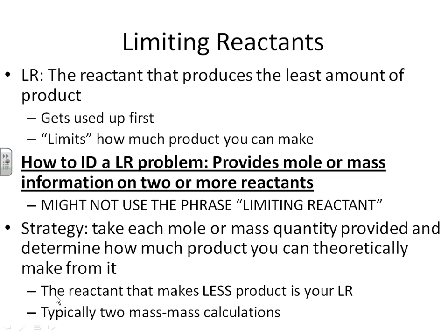How to identify a limiting reactant problem: how do you know that you have one? Because the phrase 'limiting reactant' will most likely not be used. You cannot rely on the problem saying which reactant is limiting — it actually won't say that. What it will say is it'll give you mole or mass information on two or more reactants. That's how we're going to know that we have a limiting reactant problem.